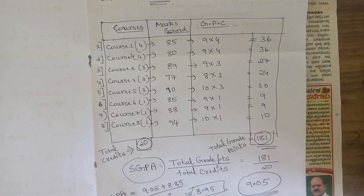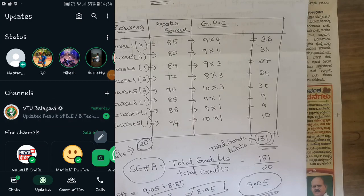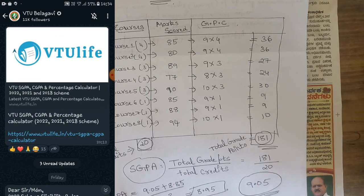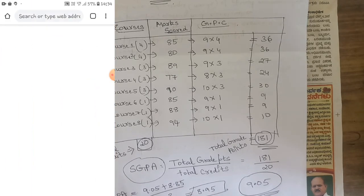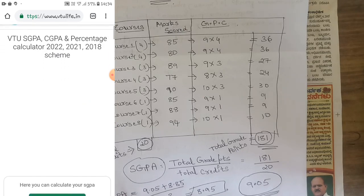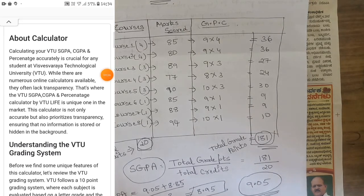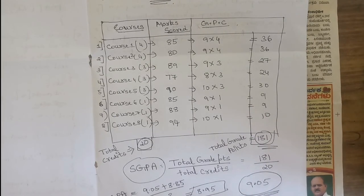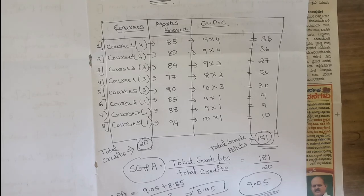If you don't want to do manual calculation, the VTU official website has an SGPA/CGPA calculator. You can visit that link — it will also appear in the WhatsApp channel shown on the right of the screen. We're also going to start covering 4th semester subjects soon. Please like, share, subscribe, and comment whether this video was useful for you.